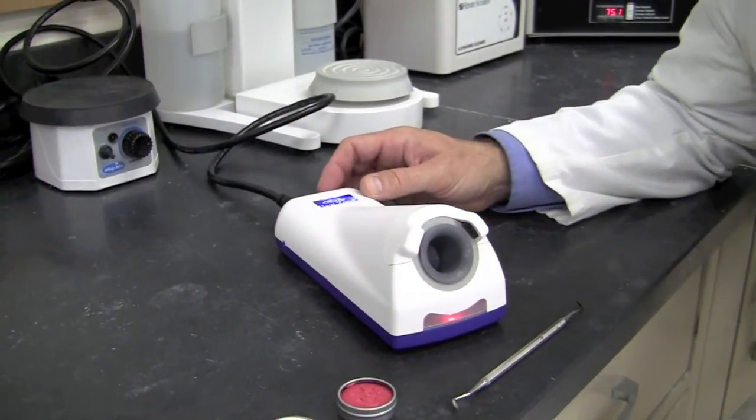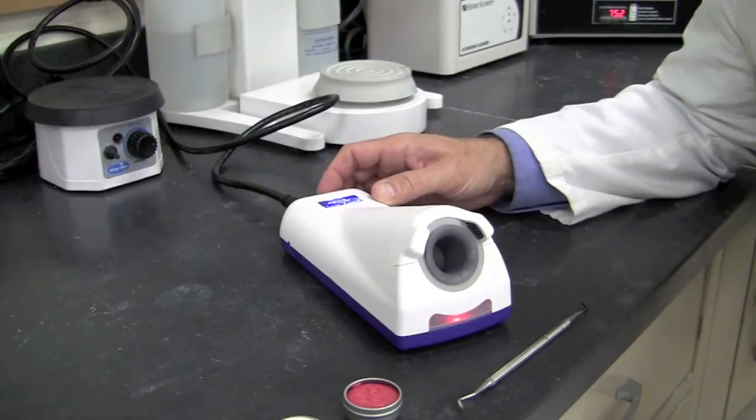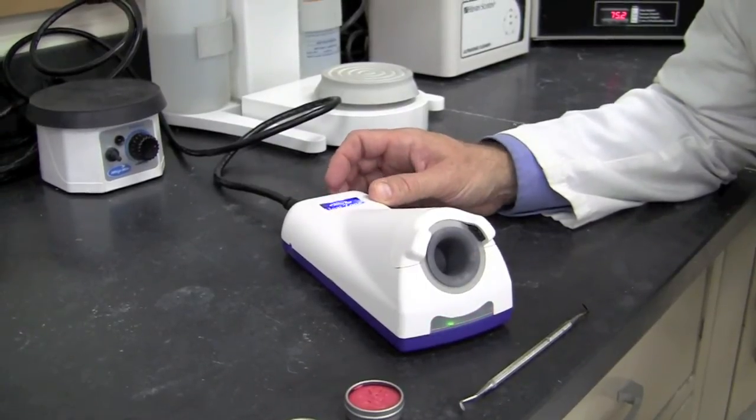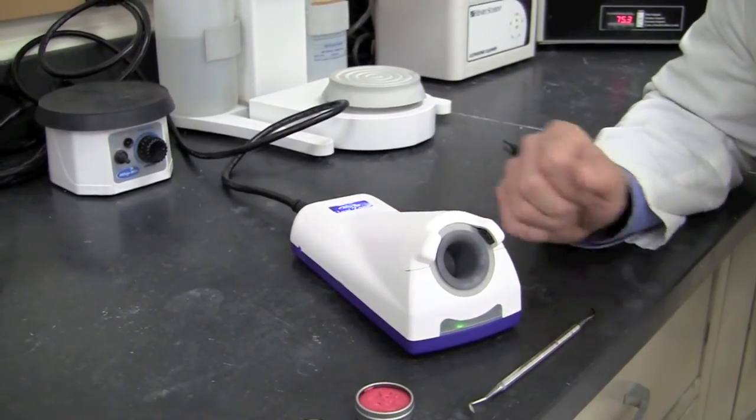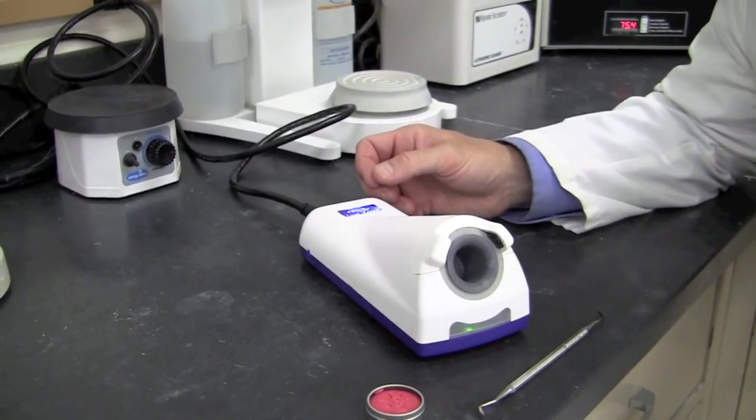To reset the unit, simply turn the unit off with the switch in the back and turn the unit back on. That will show the green light and you'll be ready to heat your tool again.